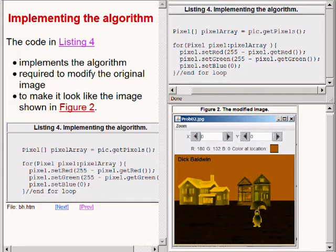The source code at the top right of your screen shows the algorithm in its entirety. When we apply this algorithm to the original image it will produce an image that looks like the image on the bottom right.